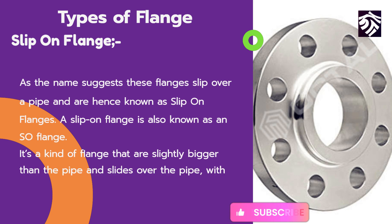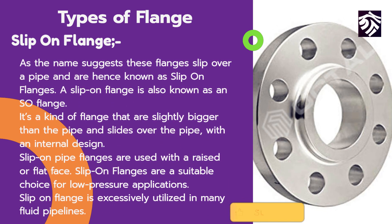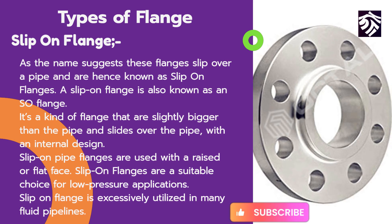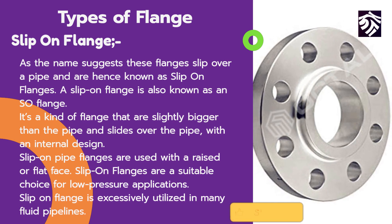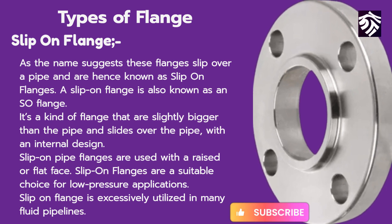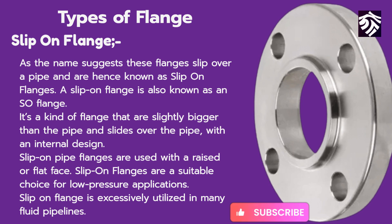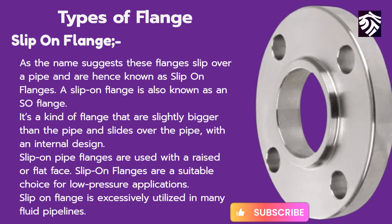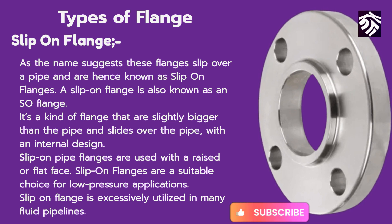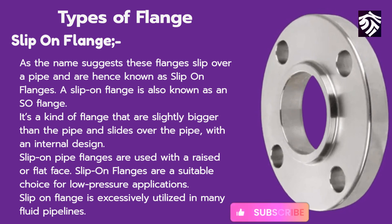The common type of flange is the slip-on flange. As the name suggests, these flanges slip over a pipe and are hence known as slip-on flanges. A slip-on flange is also known as an SO flange. It is a kind of flange that is slightly bigger than the pipe and slides over the pipe with an internal design. Slip-on pipe flanges are used with a raised or flat face and are a suitable choice for low-pressure applications, and are extensively utilized in many fluid pipelines.